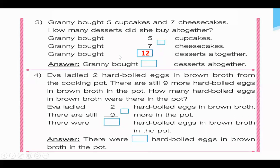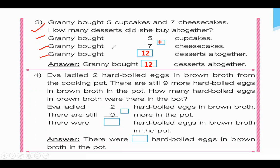So this is the next page. Granny bought 5 cupcakes and 7 cheesecakes. How many desserts did she buy altogether? So granny bought 5 cupcakes plus 7 cheesecakes, so we have to put a plus sign. Granny bought 5 cupcakes plus 7 cheesecakes, so granny bought 12 desserts altogether.